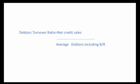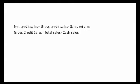This is only credit sales. Total sales includes credit sales. Gross credit sales minus sales returns gives us net credit sales. So the formula is: net credit sales divided by average debtors including bills receivable.